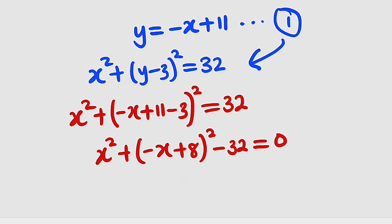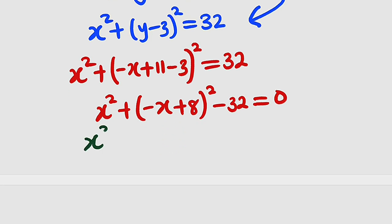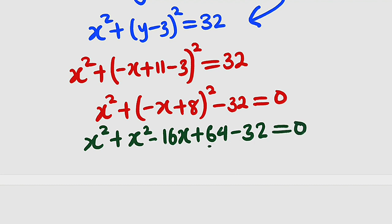Now let us expand this. We have x squared plus, we take this, we square that, we have positive x squared. Then minus 2 times this times this will give us negative 16x. Then 8 squared is 64 minus 32, this is equal to 0. 64 minus 32 is 32, so we have 2x squared from here. 2x squared minus 16x plus 32, this is equal to 0.